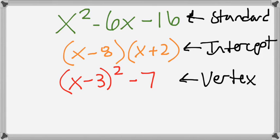Vertex form tells us exactly where the vertex is. We call it intercept form because if we solve each parenthesis equal to zero, x would equal 8 for one parenthesis and x would be negative 2 — those are the intercepts. Standard form is called that because it's the usual way we see these equations written. And vertex form tells us where the vertex is.